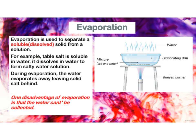When I have an insoluble solid such as sand, it's separated from water by filtration. But if I try to separate water from salt by filtration, both water and salt will pass through the pores of the filter paper, so filtration doesn't work. To separate water from salt, we use evaporation. Evaporation is used to separate a soluble solid from a solution — for example, to separate water from salt or water from sugar. During evaporation, the water evaporates away, leaving solid salt behind. One disadvantage of evaporation is that the water cannot be collected.